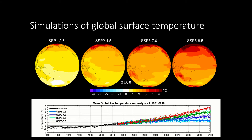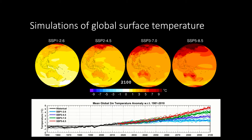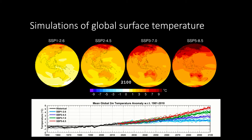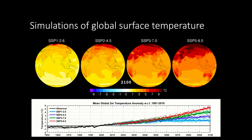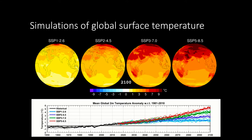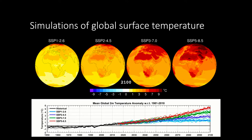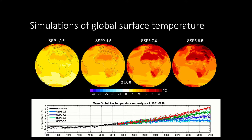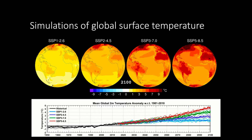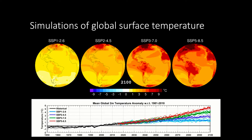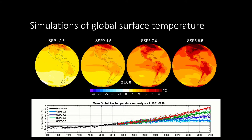Singapore is projected to see between 1 to 2 degrees Celsius increase in temperature for the low greenhouse gas emissions scenario, to between 4 to 5 degrees Celsius increase in temperature for the very high greenhouse gas emissions scenario.